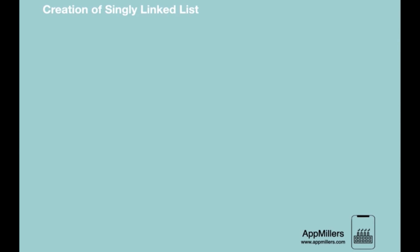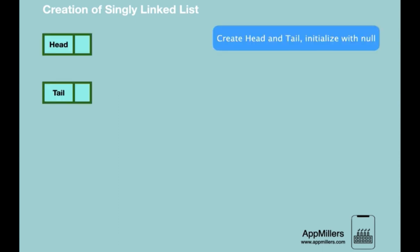There are a few steps to create a singly linked list. First, we create a blank head reference and a blank tail reference, and initialize both with null. We know that head always points to the first node, and tail to the last. Right now we don't have any nodes, so we set them to null, indicating there are no nodes in the list. The next step is to create a blank node, initialize its reference part with null, and then initialize its data part with a value — let's say 1.